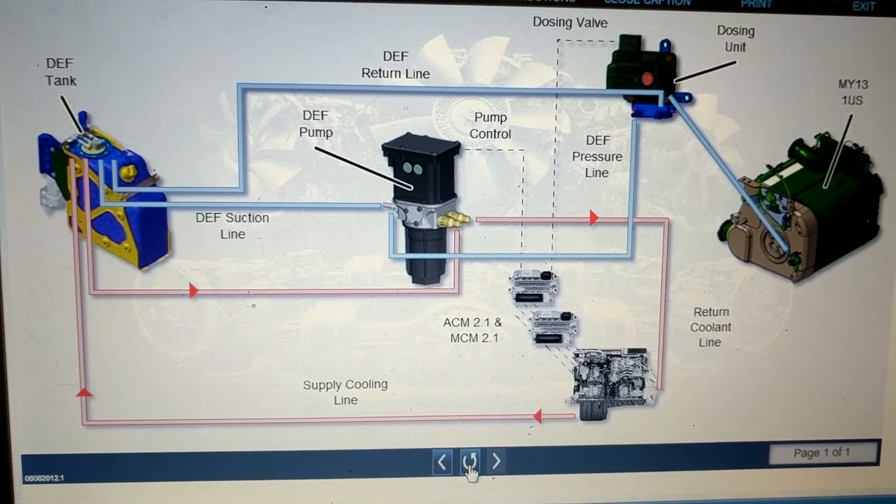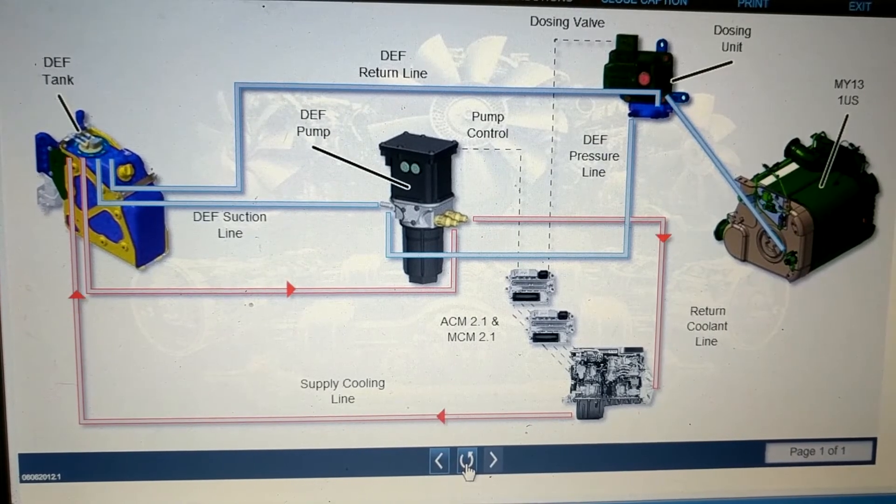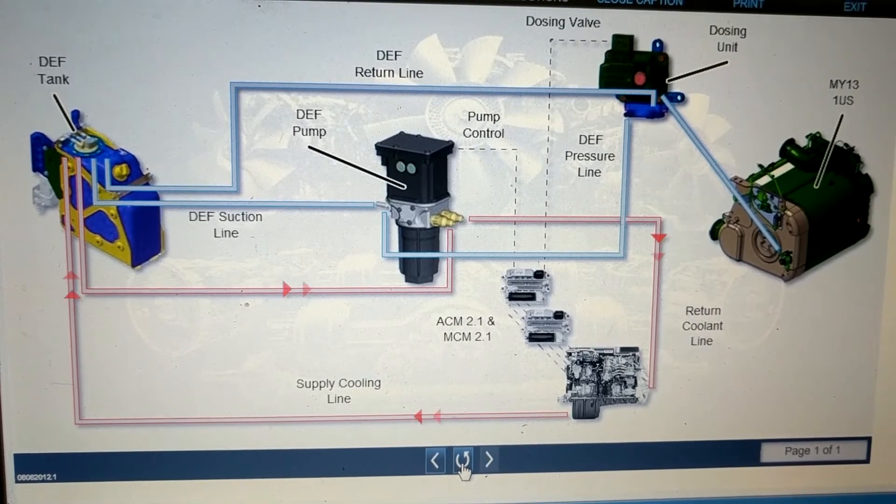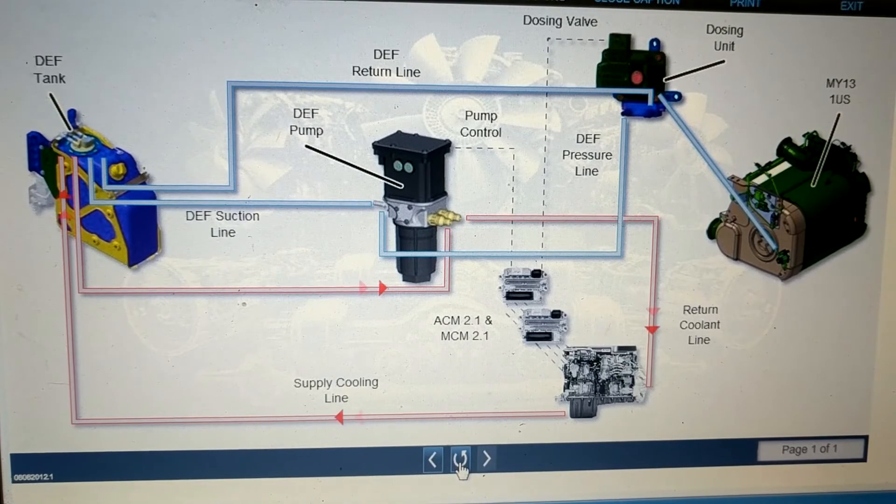ATS coolant flow. The strategy of using engine coolant for warming both the DEF tank and pump continued with the GHG-14 model engines. Upon reaching specified conditions, the coolant flows to the DEF tank and then to the pump before returning to the engine.